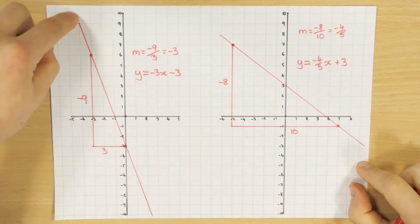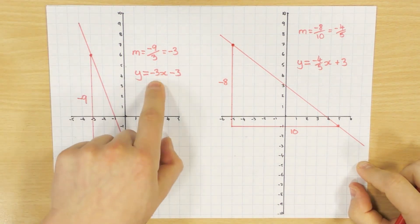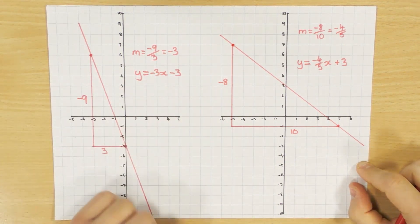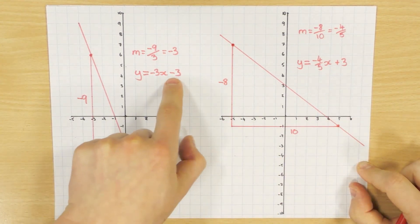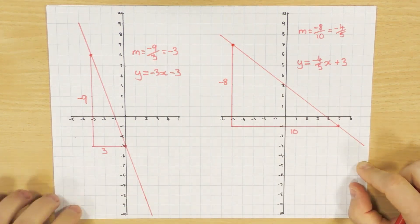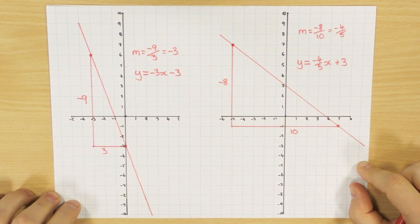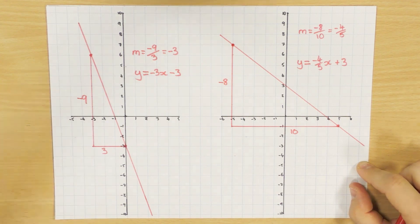So a couple of things to remember. If it's decreasing, your gradient is negative. And obviously, where it crosses the y-axis, just make sure if it's a minus, you put a minus there. And if it's a positive, you put a positive there. As long as you remember those steps, you should be okay at finding the equation of a straight line. Hope that helps, guys. Cheers.